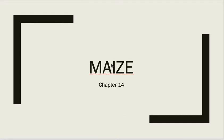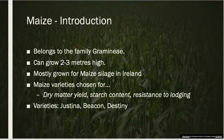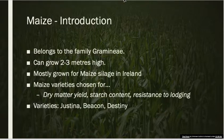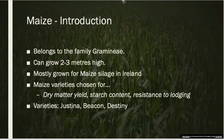I'm going to record a few notes on maize. First of all, the introduction to maize. Maize belongs to the family Gramineae, which we've encountered already when looking at barley and grass. Maize grows quite tall — in Ireland it can get up to three meters high — and mainly we grow it for maize silage here, for reasons that will come up in a later slide.